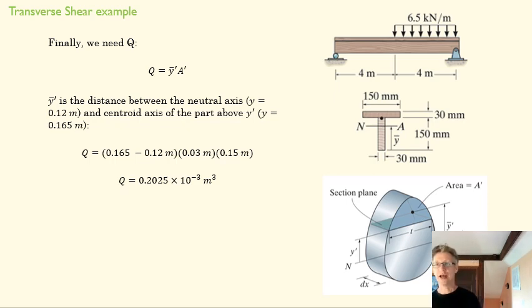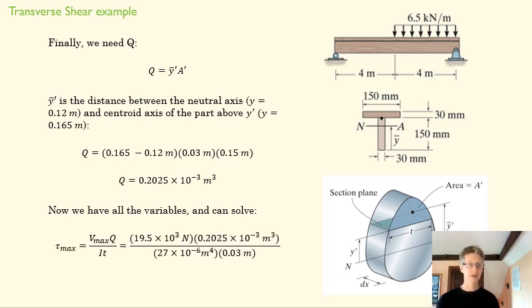So now we've got what we need and we can solve for our maximum stress. We found V max. That was the shear internal shear force right here. We found Q here. We found I on the previous page and then we decided our thickness was just the thickness that the glue was on. And that gives us a shear max of about five megapascals.